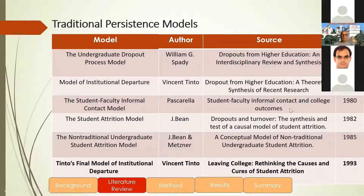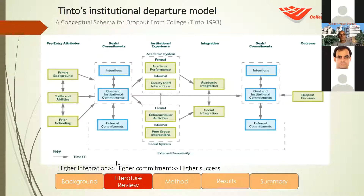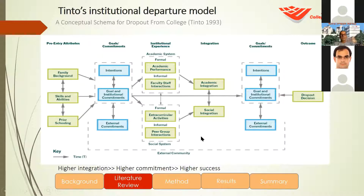There is a lot of literature about that. We used the Vincent Tinto method from 1993. The Tinto method says that if we use academic data of the students — pre-academic data — and also social data about the interaction of the students with the lectures, with fellow students and others, we can predict if the students will drop from study or not.